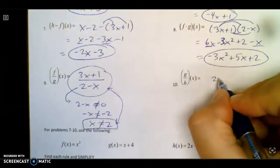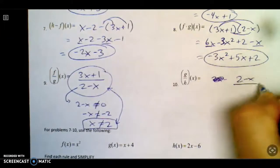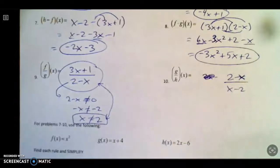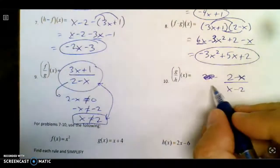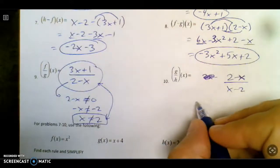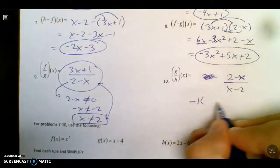Then we get to g of x. 2 minus x over x minus 2. Something will cancel. It doesn't look like it, but if you ever have something in the wrong order, what you're allowed to do and should do is take out a negative 1.